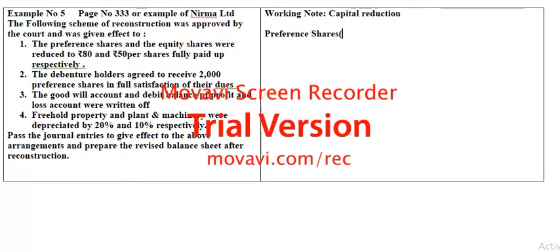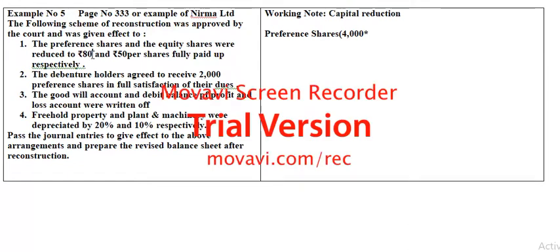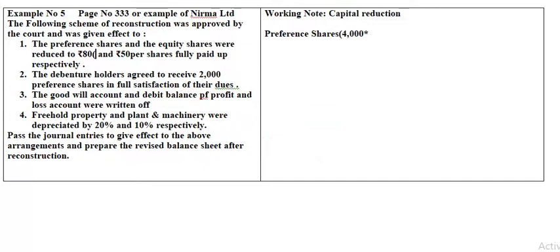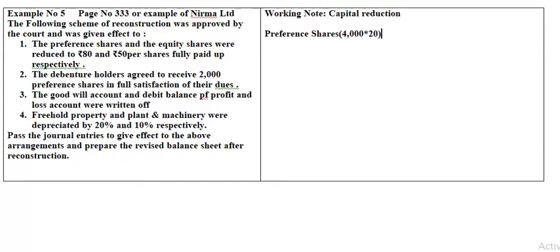Working note for preference share reduction: they have 4,000 shares issued. Reduced from rupees 100 to rupees 80 — reduction is rupees 20 per share. So 4,000 into 20 = 80,000. That is the capital reduction on preference shares — 80,000.